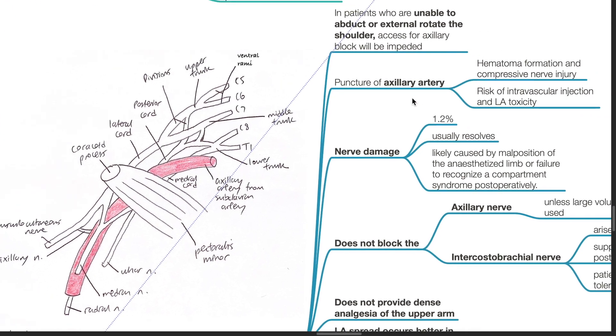Puncture of the axillary artery. Hematoma formation and compressive nerve injury can occur. Risk of intravascular injection and local anesthetic toxicity. Nerve damage occurs in 1.2% of patients and it usually resolves. It is likely caused by malposition of the anesthetized limb or failure to recognize a compartment syndrome postoperatively.